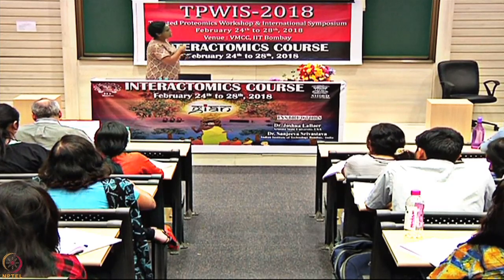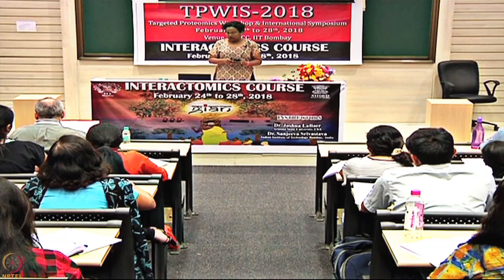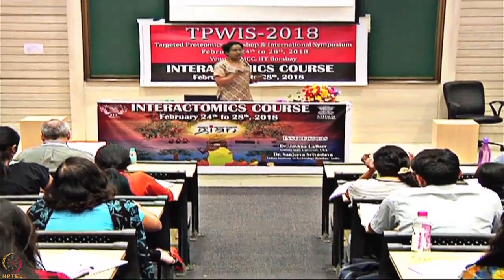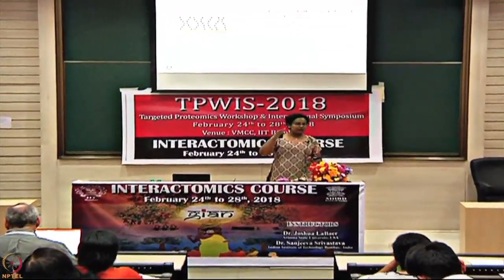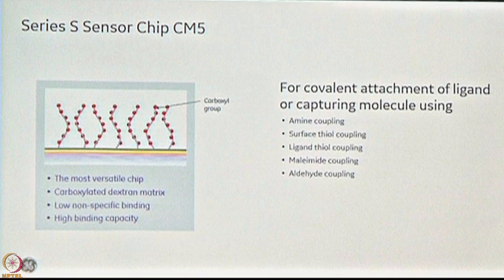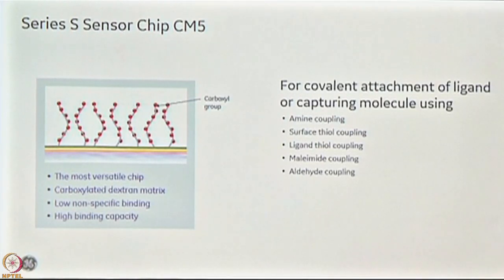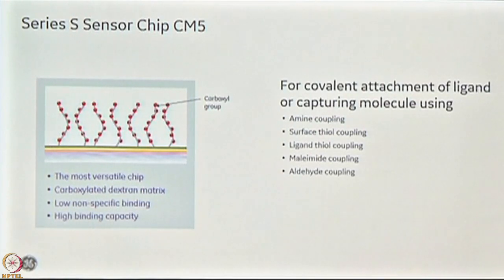There is also a CM7 chip typically used for small molecules. Regarding chip structure: on a glass surface there is a gold coating, then a linker molecule where dextran molecules are attached, and the dextran molecules have carboxymethyl groups — that is where your covalent linking happens. The CM5 chip is our most versatile chip; even now when I start a first experiment on Biacore with a particular system I go straight to CM5. It has been proven very versatile for most proteins and supports almost all kinds of covalent chemistry.